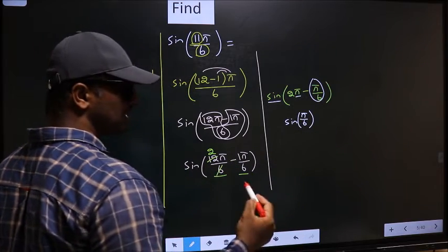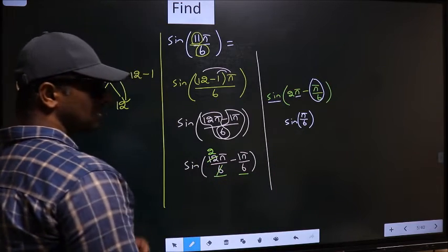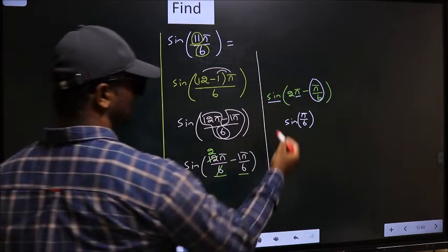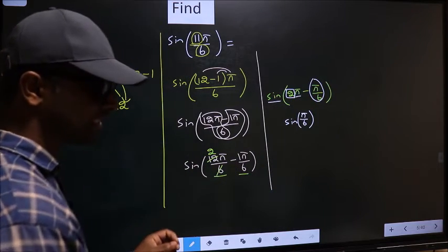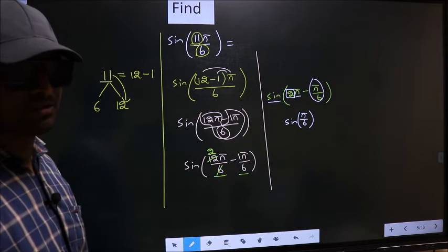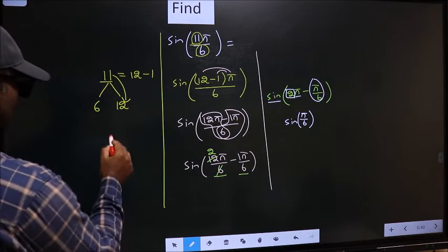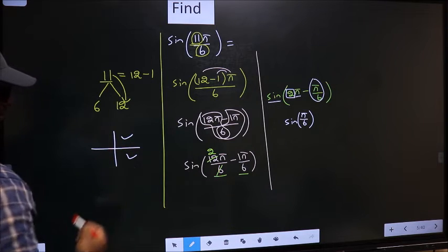Now the question arises, will we get here plus or minus? To answer that, you look at this number. Here we have 2 which is even. So all the even multiples of π lie either in the first quadrant or in the fourth quadrant.